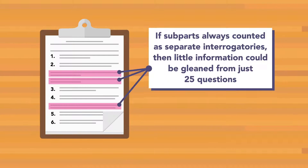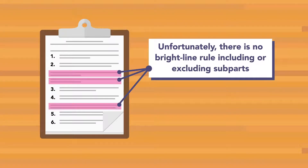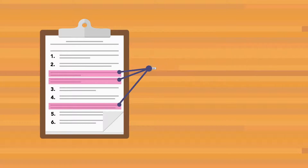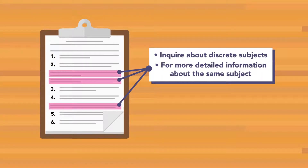On the other hand, if subparts always counted as separate interrogatories, then little information could be gleaned from just 25 questions. Unfortunately, there is no bright-line rule including or excluding subparts. Instead, whether the subparts can be included in a single interrogatory depends on whether the subparts inquire about discrete subjects or are merely for more detailed information about the same subject.